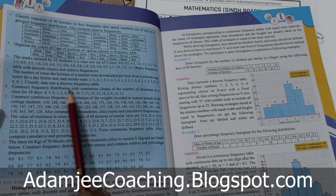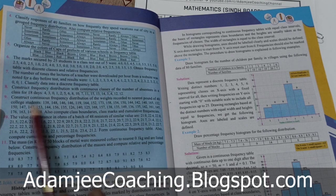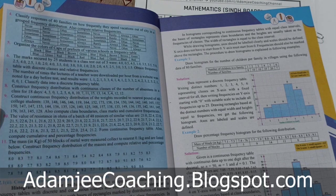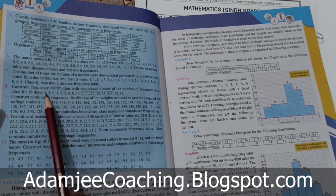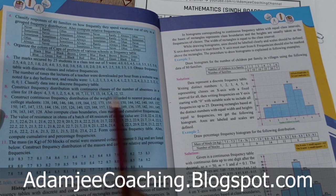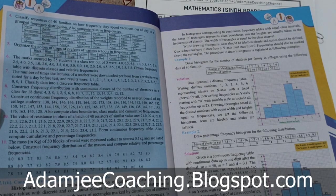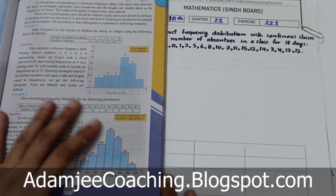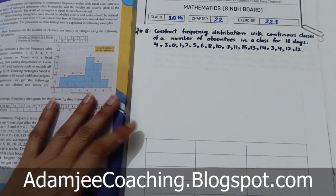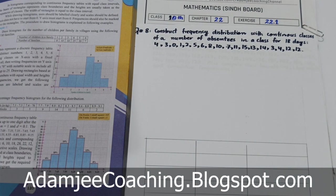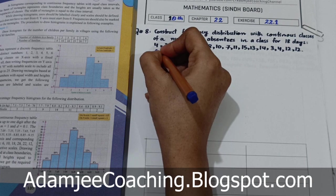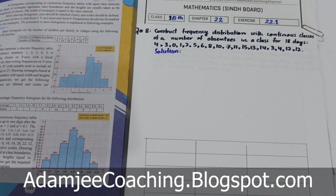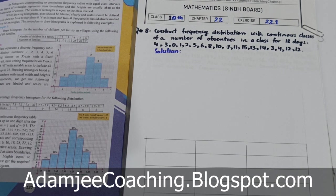Aapke paas 18 days ka data maujood hai. Pehle din 4 students absentees, second day teen - is tarah se frequency table banana hai continuous classes ke saath. Shuru karte hain. Continuous classes ke saath banate waqt pehle class ki width find out karni hoti hai, height find out karni hoti hai aur kaafi saari cheezein. Toh hum pehle range find out karte hain.